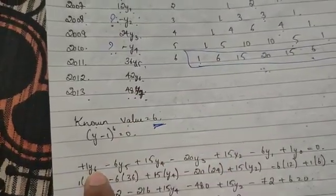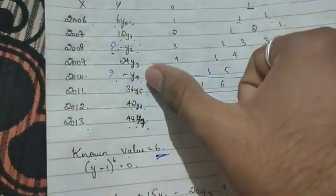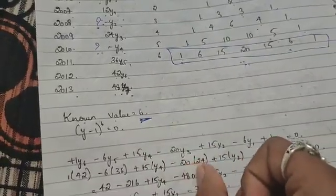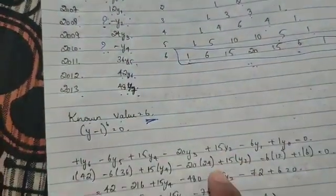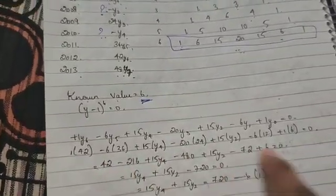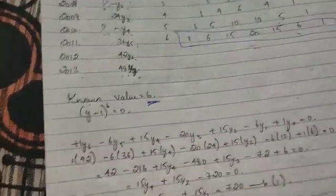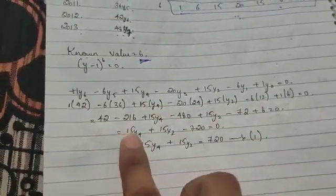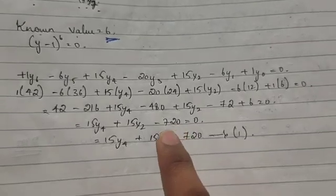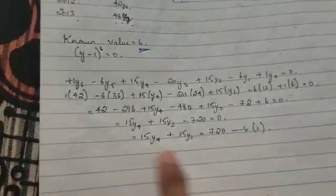Same: 1, 6, 15, 20, 15, 6, 1. So according to y0, y1, y2, y3, y4, y5, y6: 0, 1, 2, 3, 4, 5, 6. So 0 here is 1 times 6, so 42. 36 here is 15, here question mark is y4 so 15y4. Here 20, here 24, so 20 times 24. Here is the same question mark, so 15 times y2. Here 6 times 12, and here 1. You have to multiply and you have a plus, minus, plus, minus pattern. Substitute: 15y4 plus 15y2 minus 720 equals zero. This is equation 1.